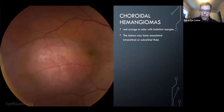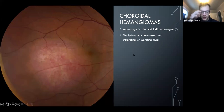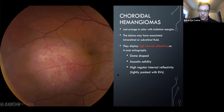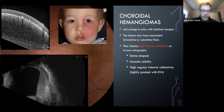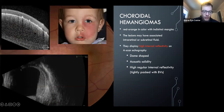Melanocytoma is always right on the optic nerve, is very darkly pigmented, and generally has no malignant potential. Choroidal hemangiomas are orange-red, can cause exudative detachments, and have high internal reflectivity. In Sturge-Weber, you can see either circumscribed or diffuse choroidal hemangiomas that can involve the whole choroid. These eyes are at high risk for glaucoma.